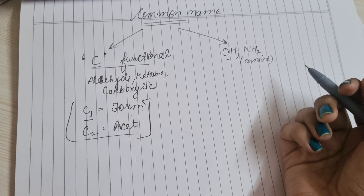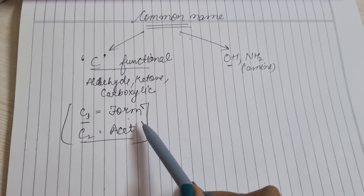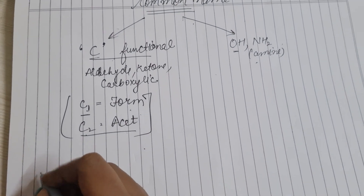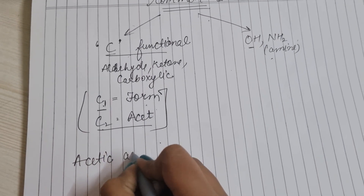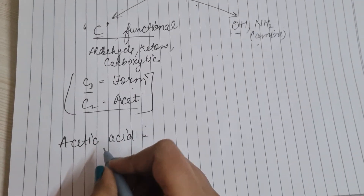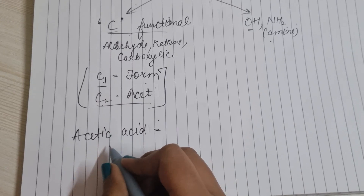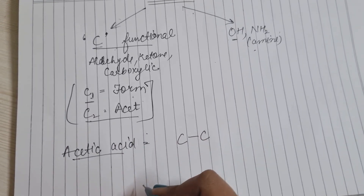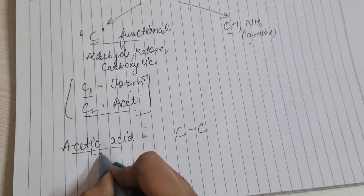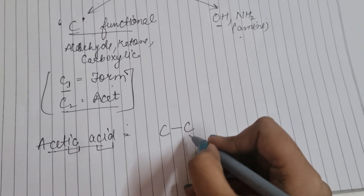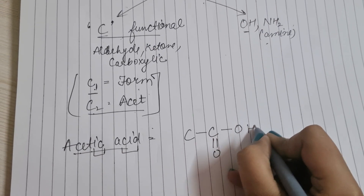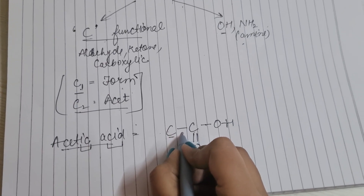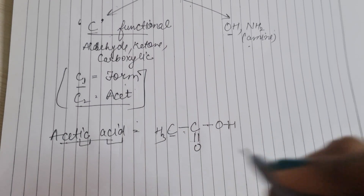Alcohol और amine के लिए simply naming देनी है। जैसे Acetic Acid — acid मतलब 2 carbon, carboxylic acid group लगाओ। Acetic acid vinegar में present होता है, which is a weak acid। Structure: CH₃ के साथ carboxylic acid group लगा दो। Valency पूरी करने के लिए hydrogen लगाओ।